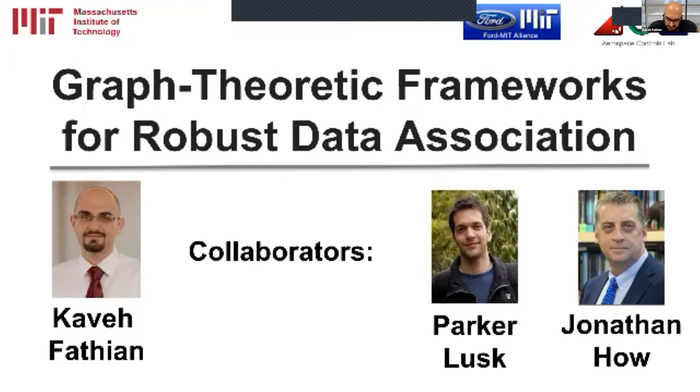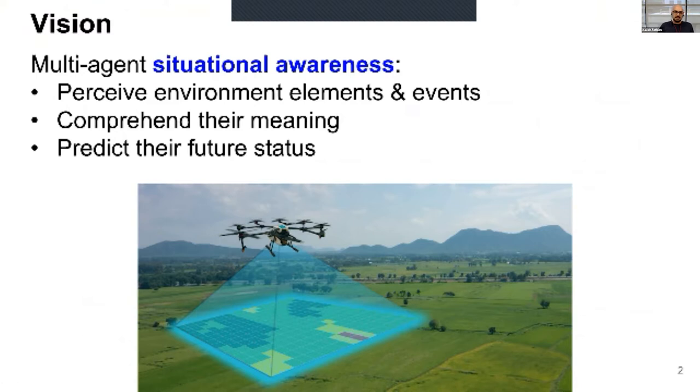Thanks for giving me the opportunity to talk here. This is a collaboration work with Parker Lost and John Howe at MIT. What I'm going to do is first motivate the problem and the topic that I'm really interested in these days, and it's multi-agent situational awareness. By definition, situational awareness is perception, comprehension, and prediction of the elements and events in the environment.